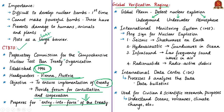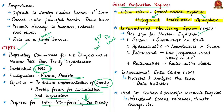The verification regime of the CTBT acts as a global alarm designed to detect any nuclear explosion — underground, underwater, or in the atmosphere — and monitors countries' compliance. It consists of the International Monitoring System (IMS), which has 337 facilities: 321 monitoring stations and 16 laboratories built worldwide. The IMS uses four complementary verification methods: seismic stations, hydro-acoustic stations, infrasound stations, and radionuclide stations.